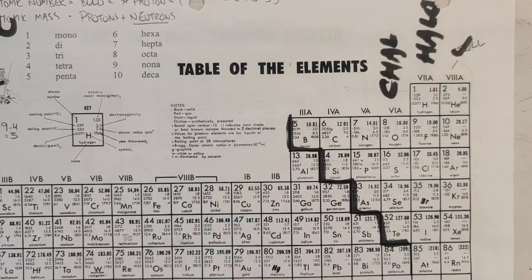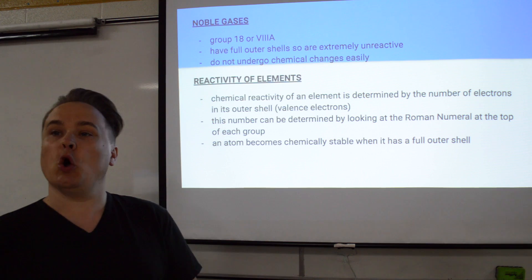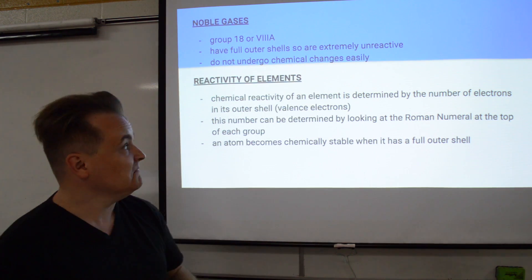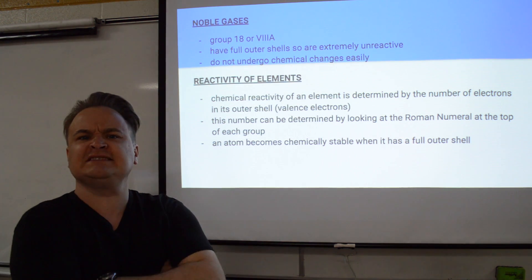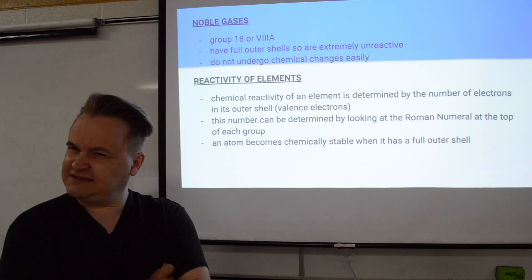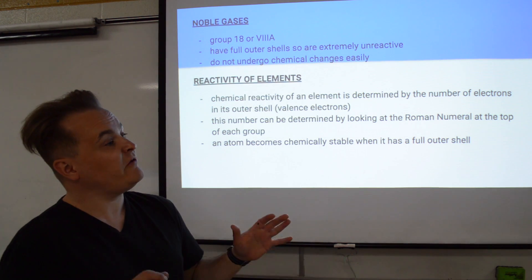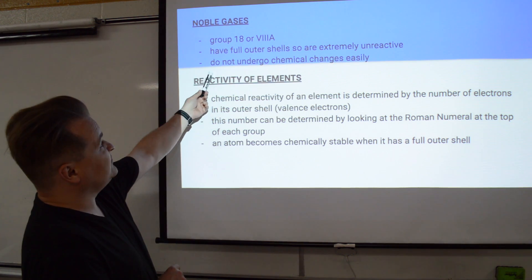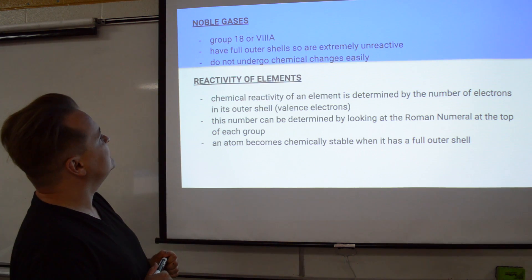The last group is the noble gases — these are the snobs, they are noble, like royalty. Does royalty interact with common people? No. So noble gases have a full valence shell. If it could hold 18 electrons, they have 18 — do they need any more? No, they're full. They do not want to react with anyone. They're happy on their own, they have a full shell of electrons, they don't undergo chemical changes easily, and they're very unreactive.